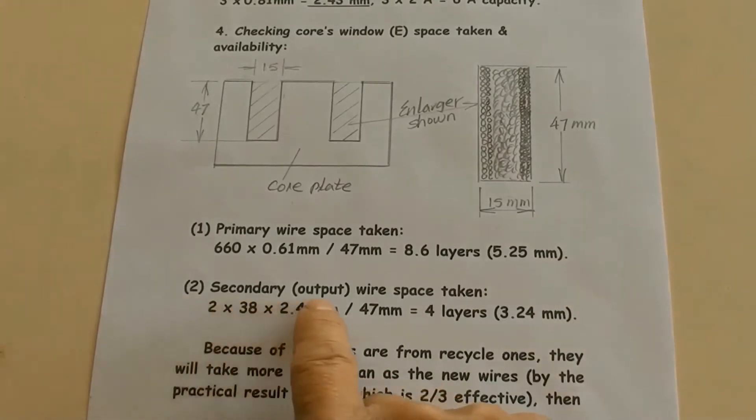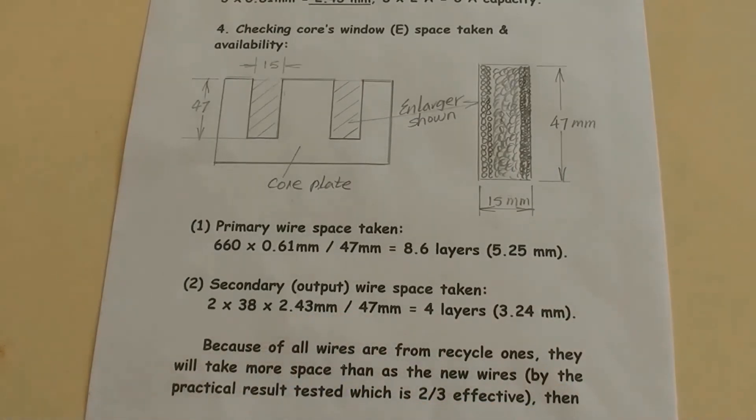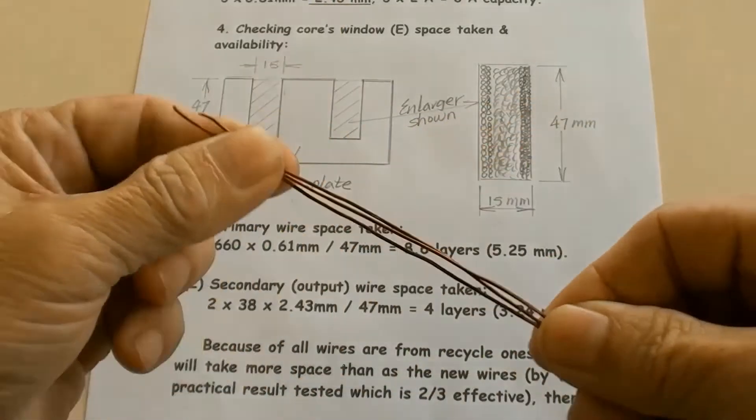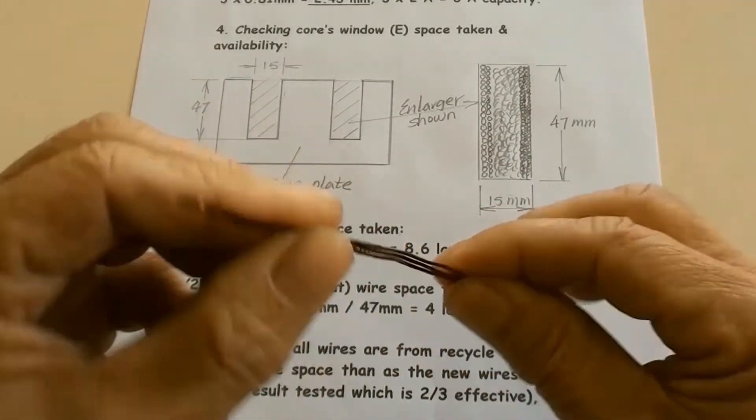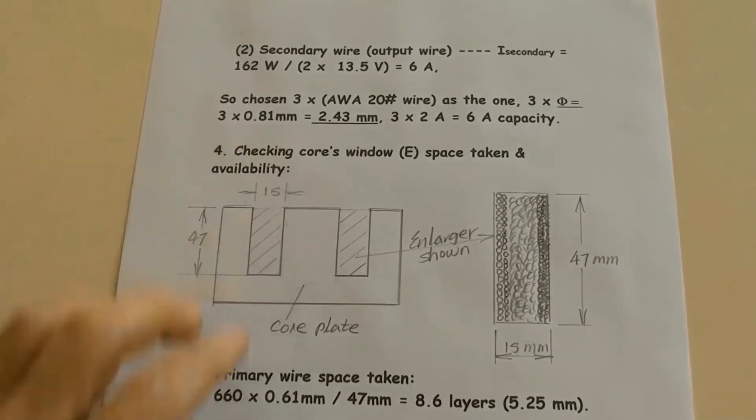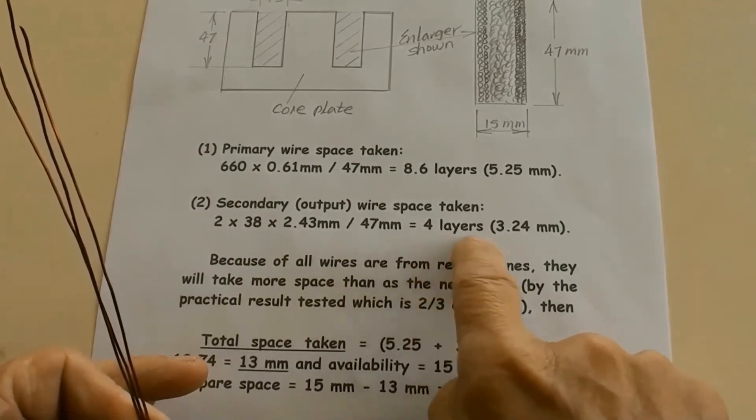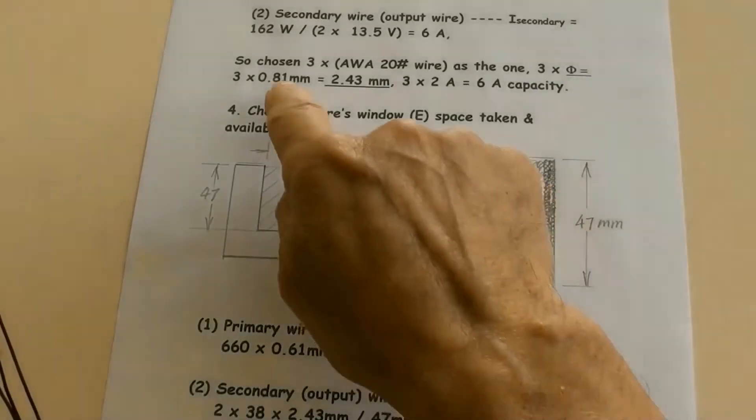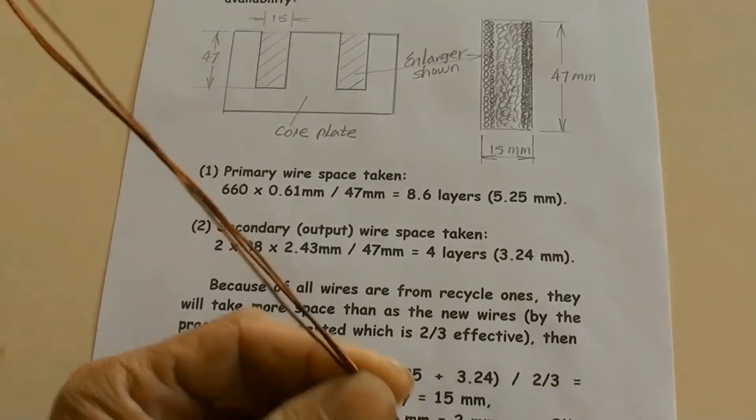Secondary wire space taken: 2 times 38 times 2.43mm over 47mm equals 4 layers, 3.24mm. These are three wires of AWG20, side by side is 2.43mm. The 0.81mm is the wire of AWG20 diameter and also a layer's thickness, so 4 layers equals 3.24mm.